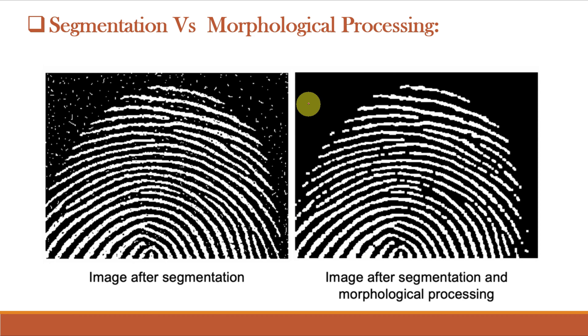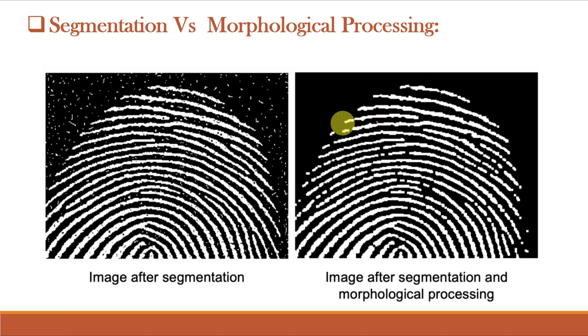So, once the segmentation is complete, morphological operations can be used to remove imperfections in the segmented image and deliver information on the shape and structure of the image.